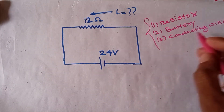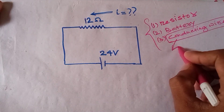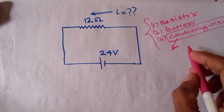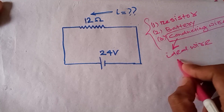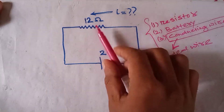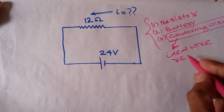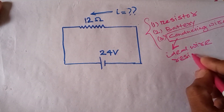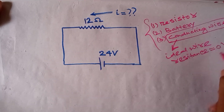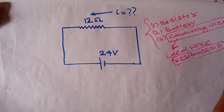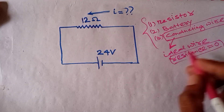First, let's look at the conducting wire concept. What is a conducting wire? A conducting wire is an ideal wire for which we neglect the resistance. We neglect the resistance of the conducting wire, which means it is an ideal wire whose resistance value is 0.